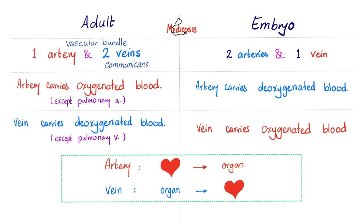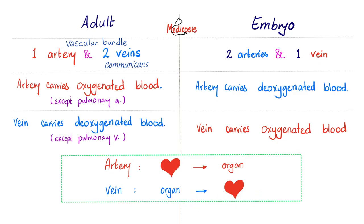What never changes is the direction. An artery is a vessel that takes blood from the heart to an organ, whether you are young or old. A vein collects blood from whatever organ back to the heart. So why do we call it the umbilical artery? Because it takes blood from the heart of the baby to the placenta. Why do we call it the umbilical vein? Because it takes blood from the placenta to the heart of the baby — because this blood is oxygenated, coming from mommy since the baby cannot breathe on its own.